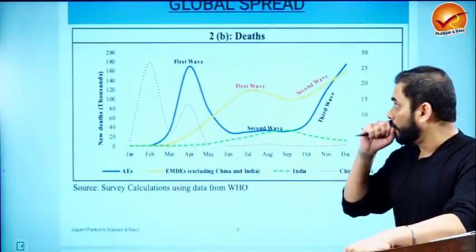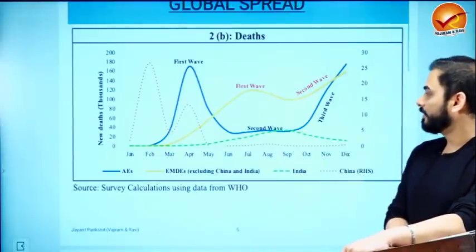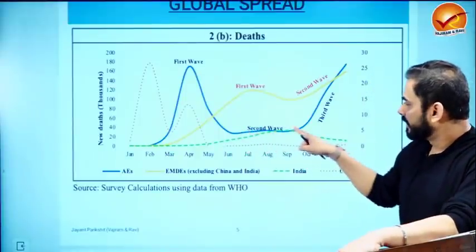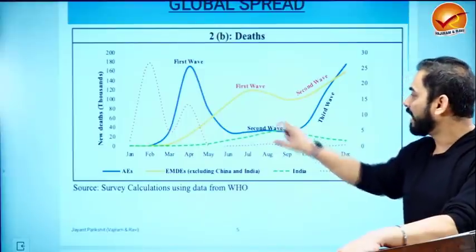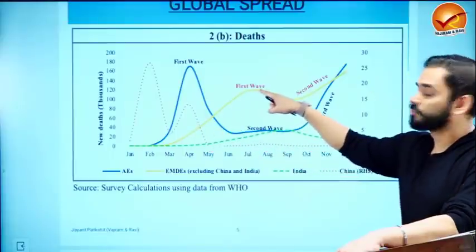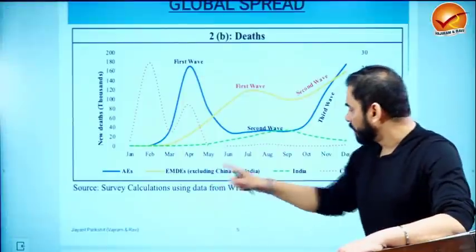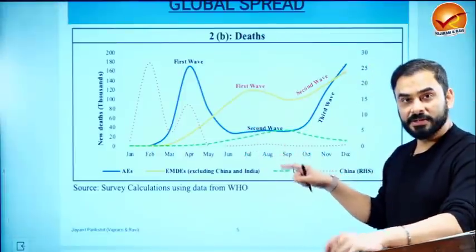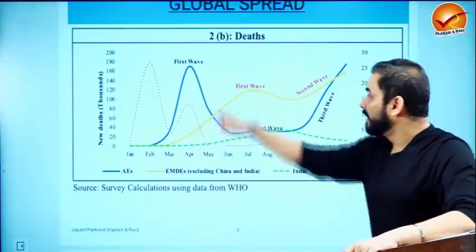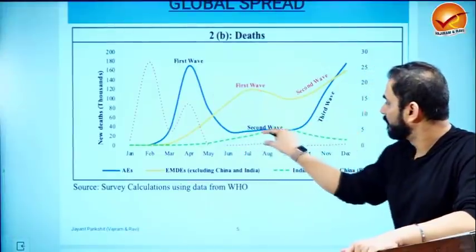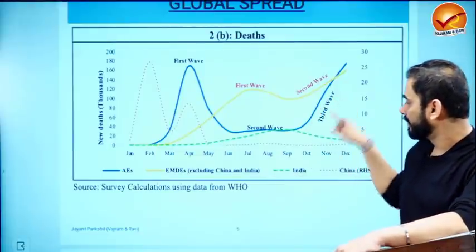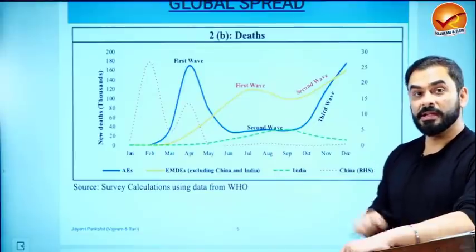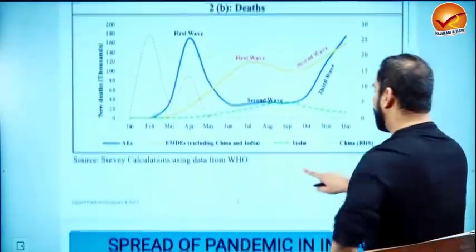Regarding deaths: in the first wave, deaths were very high because the world didn't know what was happening. For advanced economies, deaths were somewhat controlled in the second wave. India's death toll was suppressed from the first wave itself — far lower than what it could have been. Wherever second and third waves hit, death numbers zoomed up sharply.